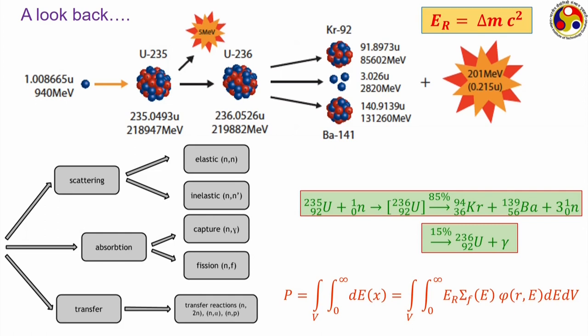Now that we know how to calculate the power produced by fission, we need to transmit that power to a coolant stream which will be used for subsequent power production. In this module we are going to look at that energy transmission procedure.